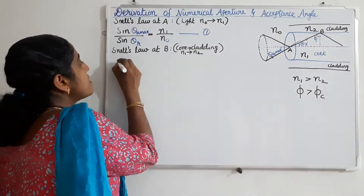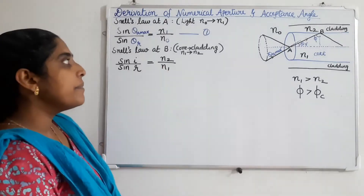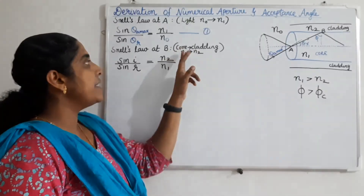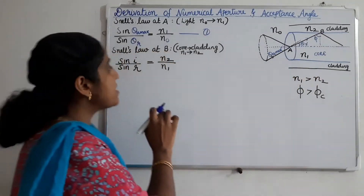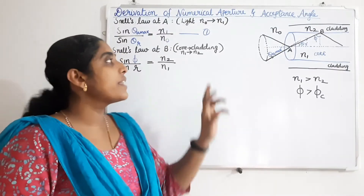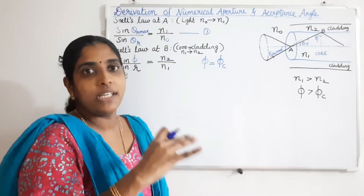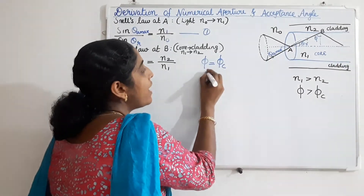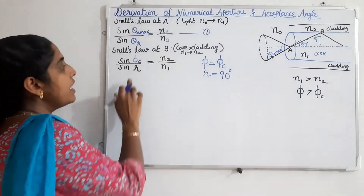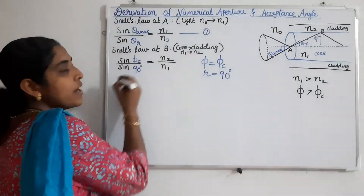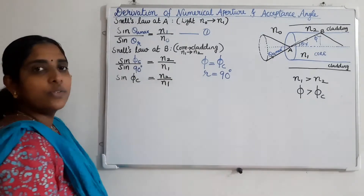Now we apply Snell's law at the core-cladding interface, point B. Here the first medium is the core with refractive index N1 and the second medium is the cladding with refractive index N2, and the angle of incidence is phi. At the starting point of total internal reflection, phi equals the critical angle phi C, and the angle of refraction becomes 90 degrees. So Snell's law gives: sine phi C equals N2 divided by N1, since sine 90 equals 1.